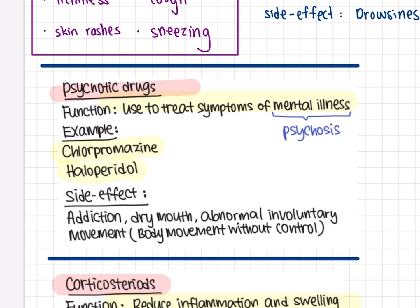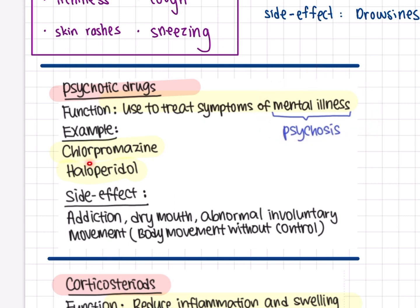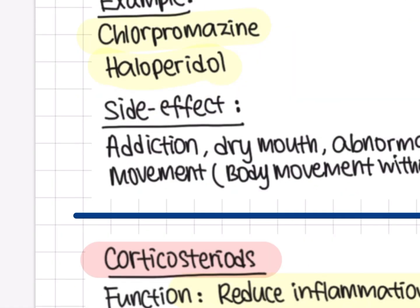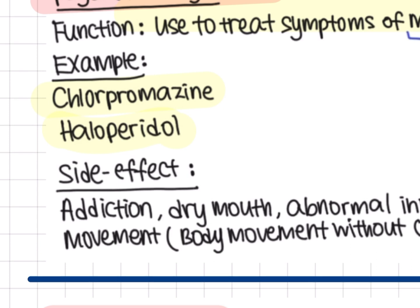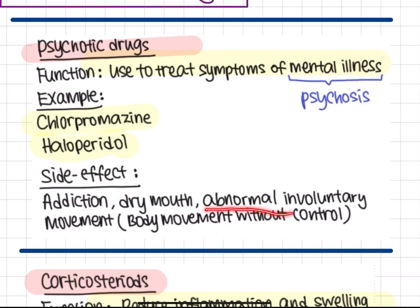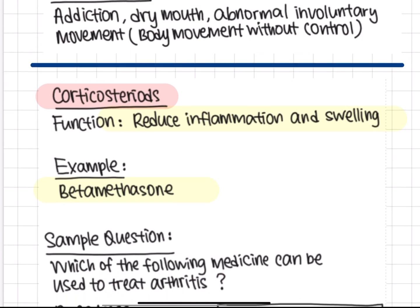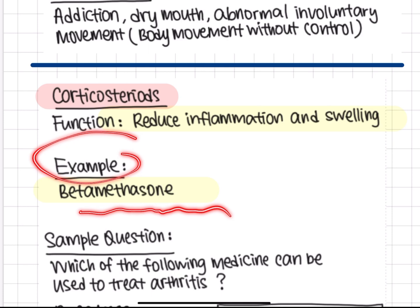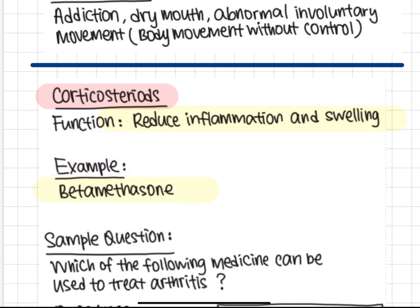Psychotic drugs are used to treat symptoms of mental illness. Examples include chlorpromazine and haloperidol. Side effects of psychotic drugs include addiction and dyskinesia, which is abnormal involuntary movement.